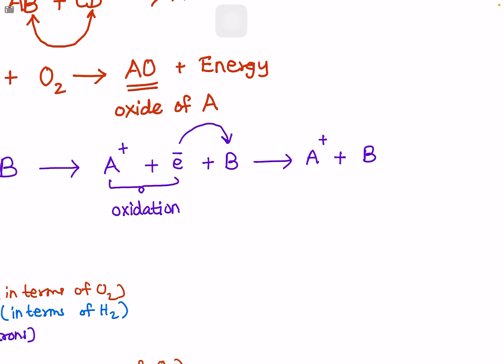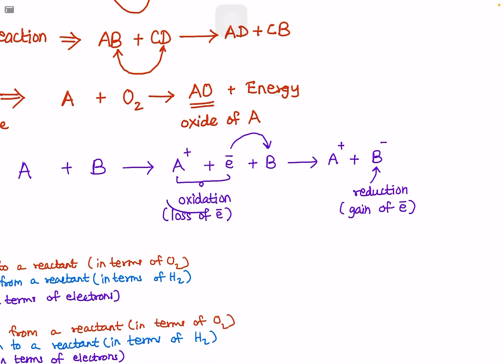If the electron loses, that is oxidation. Loss of electron is oxidation. Gain of electron is reduction. So we have reduction as gain of electrons.